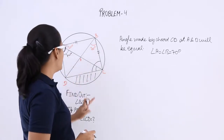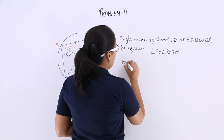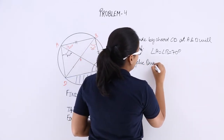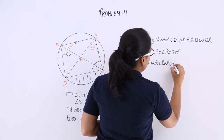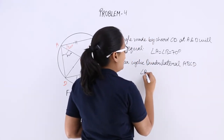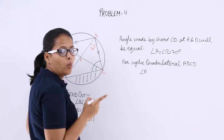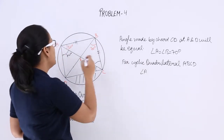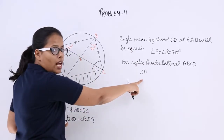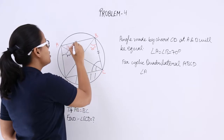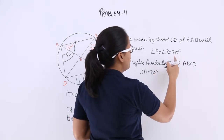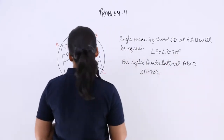For cyclic quadrilateral ABCD, angle A of the quadrilateral — don't confuse this angle with the previous one. The angle at A here was for that triangle, but this angle A is for the quadrilateral, which is 70 degrees plus 30 degrees.